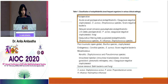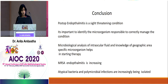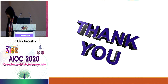To summarize: acute post-operative endophthalmitis is mostly due to coagulase-negative staph (staph epidermidis), followed by staph aureus and streptococcal infections. Delayed-onset cases are due to P. acnes, coagulase-negative staph, and fungi. Post-trabeculectomy cases are due to streptococcus followed by H. influenzae and staph species. MRSA endophthalmitis is increasing, and atypical bacteria and polymicrobial infections are increasingly isolated. Post-op endophthalmitis remains a sight-threatening condition.